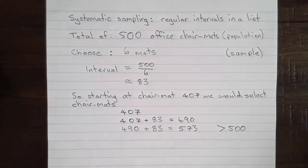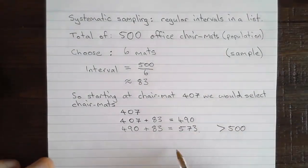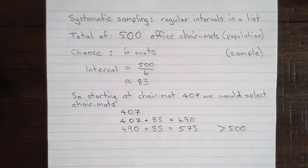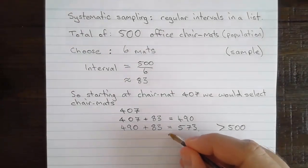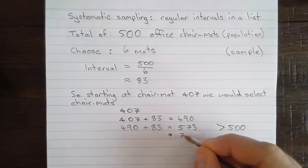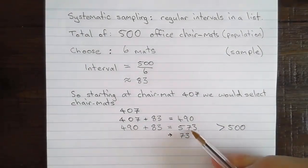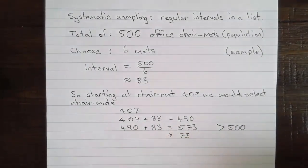So what we need to do is loop back around and start again from the start of the collection of office chair mats. So in terms of our collection, that's going to indicate that that's actually number 73, because we've gone 73 beyond the 500 that we actually have.